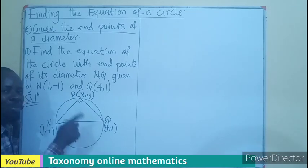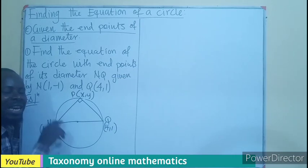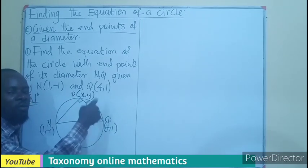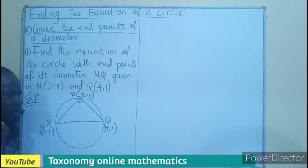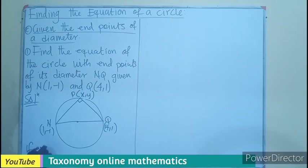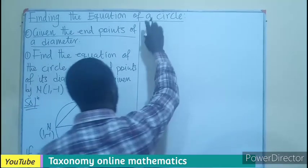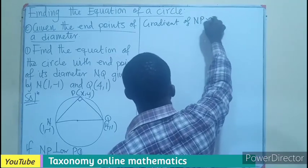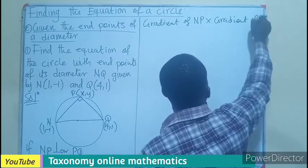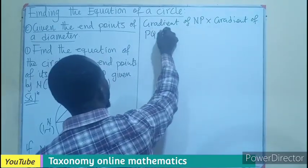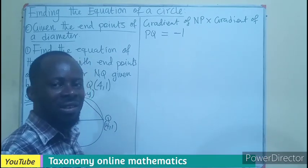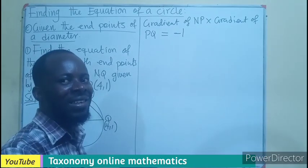This means that line NP is perpendicular to line PQ. If NP and PQ are perpendicular, then the product of their gradients must give us negative one — the gradient of one must be the negative reciprocal of the other. So if NP is perpendicular to PQ, then the gradient of NP times the gradient of PQ must equal negative one. The gradient is the change in y over the change in x.